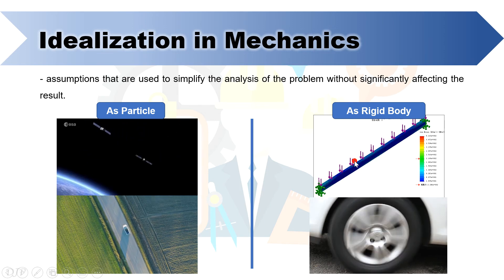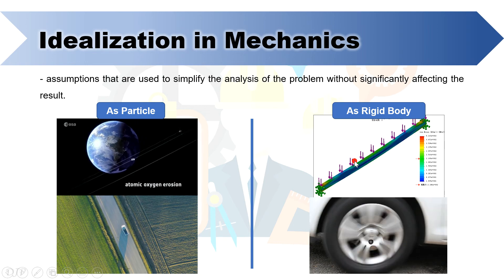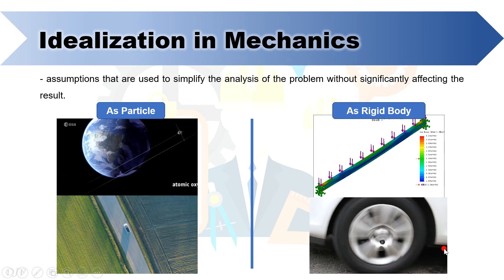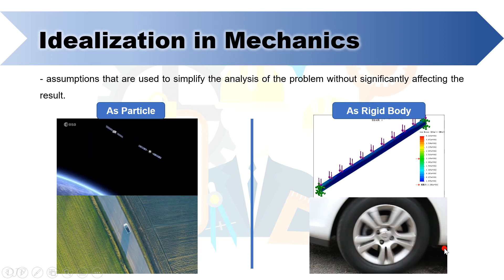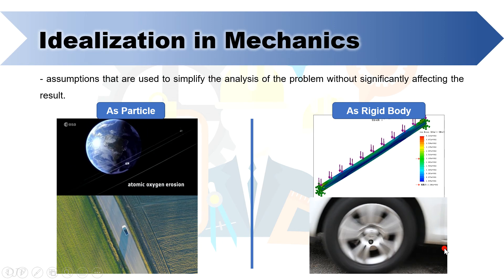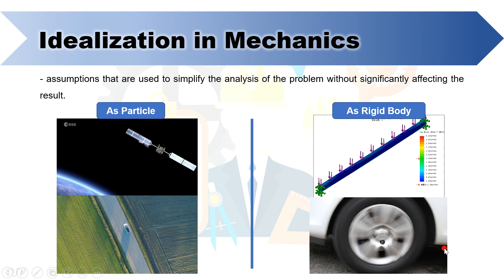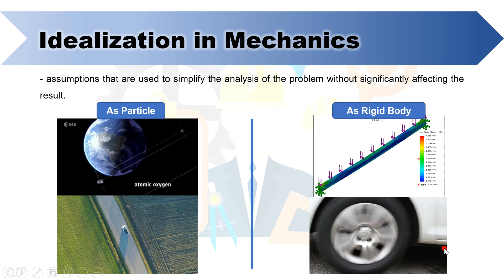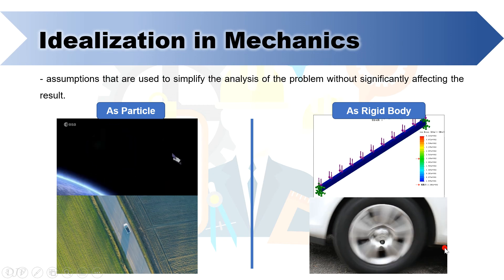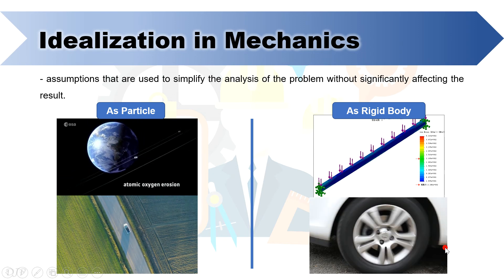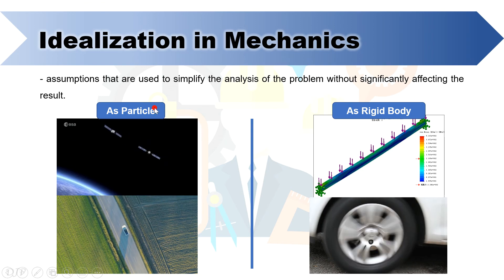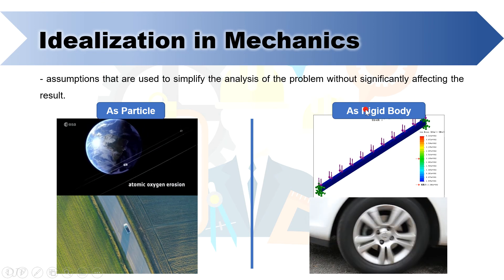Now, for another example, let's consider the spinning tire. It is possible that we can consider the tire as rigid body if the deformation is very small or can be neglected. Remember always, in this subject, we will only deal with objects that can be idealized as either particle or as rigid body.